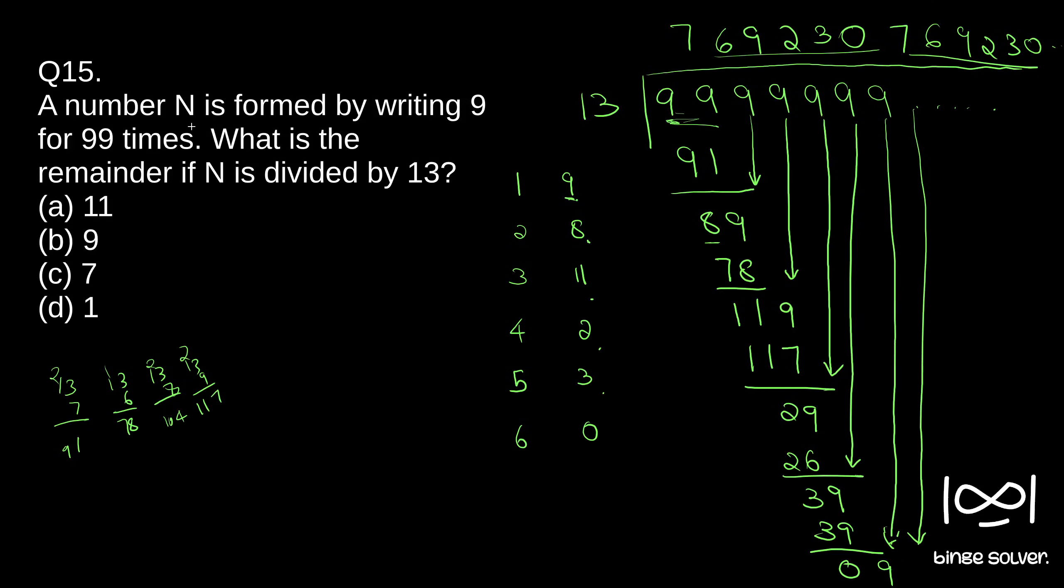The question asks for 99 times. For that, we have to find the closest number that is divisible by six. We know 96 will be divisible by six. If we had only 96 nines, our remainder would be zero. If we had 97 nines, our remainder will be nine. 98 nines, our remainder will be 11.